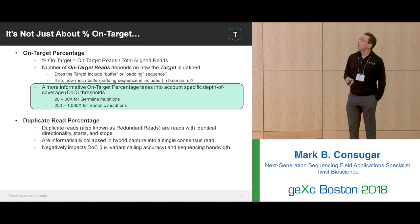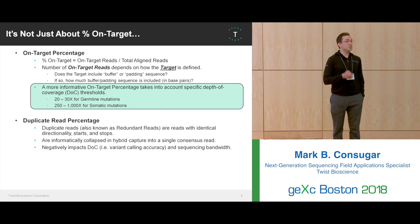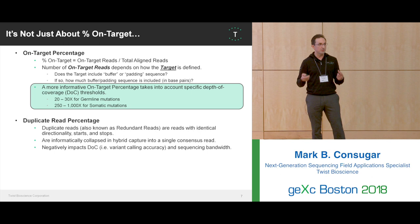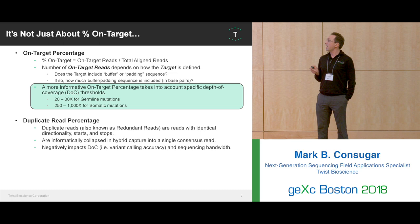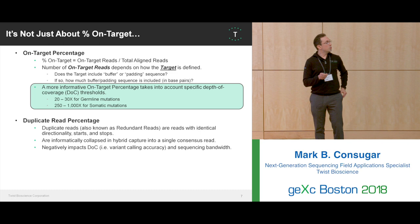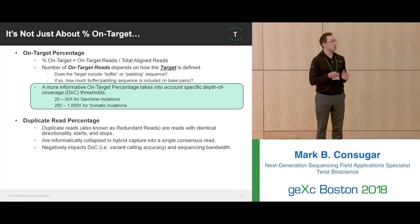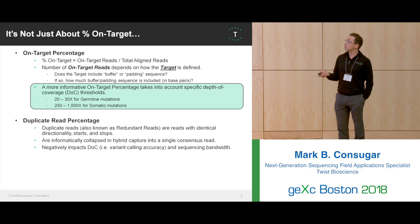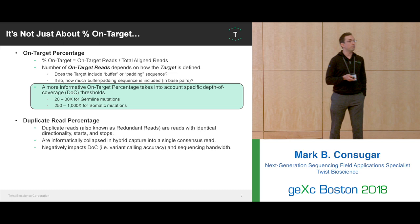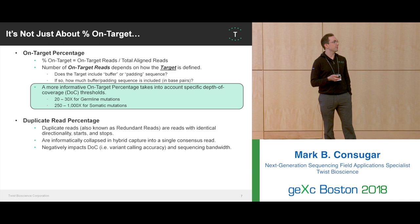Another factor impacting target enrichment is your duplicate read percentage. In hybridization-based capture, you want unique reads — reads that do not have the same directionality, start, and stop. Anything meeting all those criteria gets collapsed into a consensus read. So you could have 100 redundant reads, but if they're identical, they're collapsed into one, turning your 100x into 1x. This negatively impacts depth of coverage, variant calling accuracy, and sequencing bandwidth.